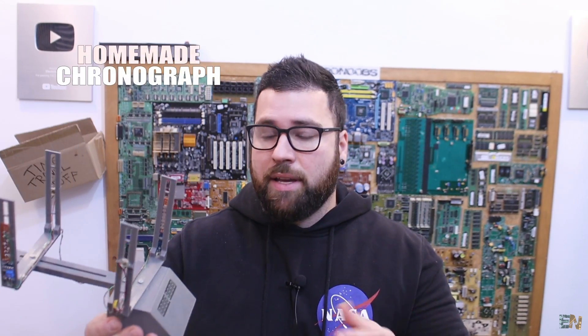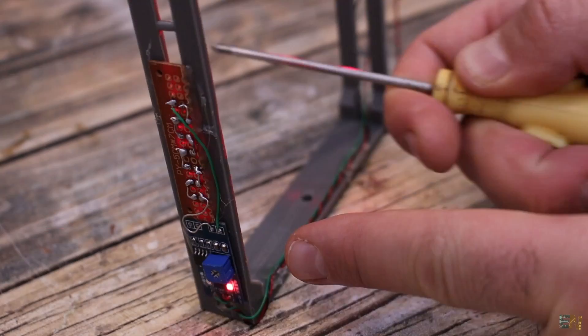This here is a homemade chronograph, and this device is used to measure the muzzle speed, which basically is the speed of bullets.